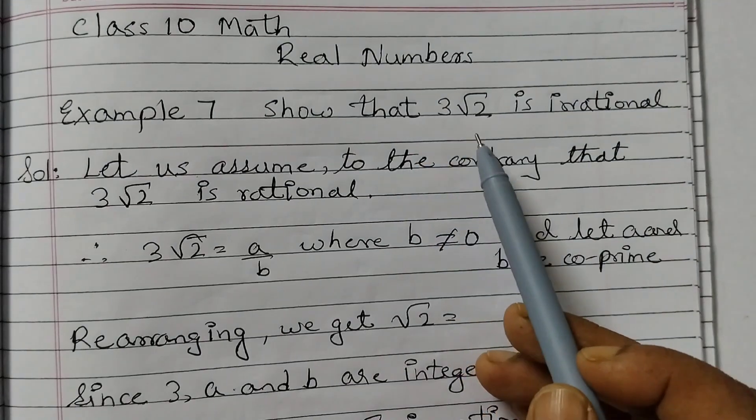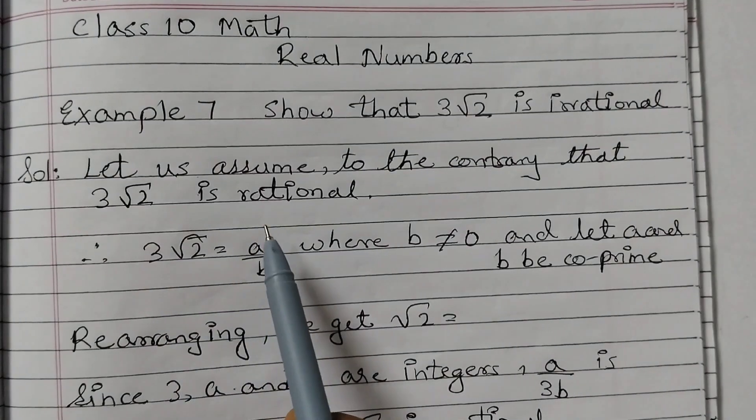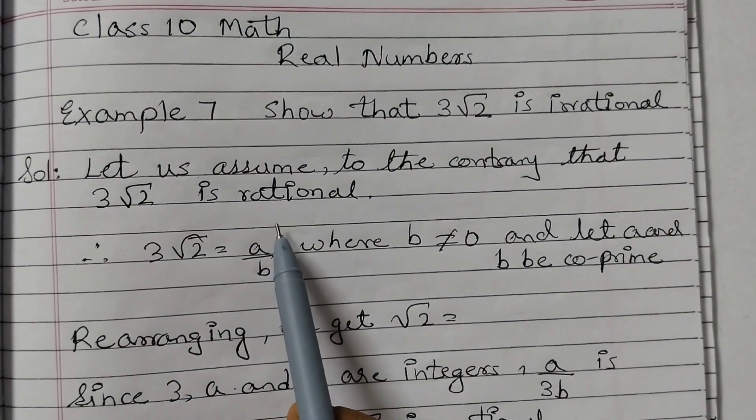We need to prove that 3 root 2 is irrational. So we will start with the assumption that 3 root 2 is rational. We are assuming it is rational.